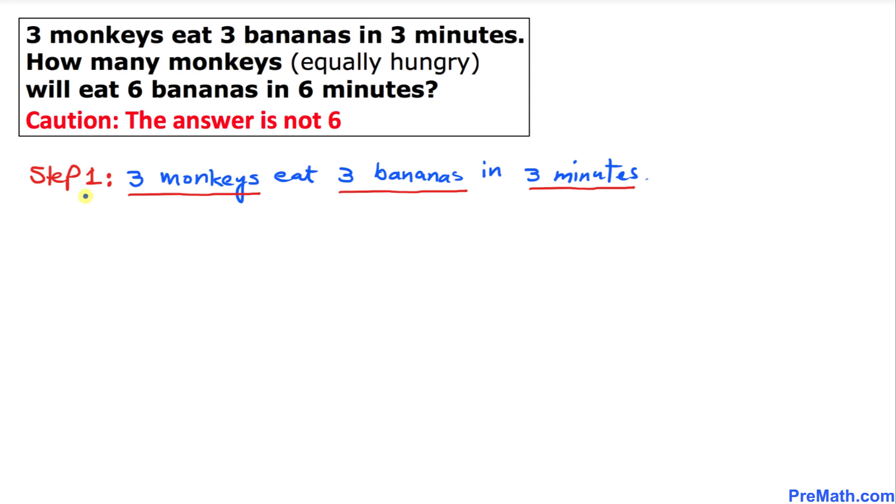Let's focus on the very first part of this question. Step number one: three monkeys eat three bananas in three minutes. Let's go ahead and convert this one into an algebraic problem, and we will use this formula: work equals rate times time.